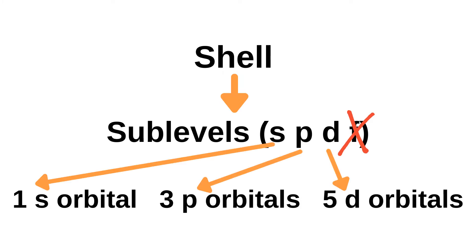Every sublevel has its own orbitals and each orbital can hold two electrons. The S sublevel has one orbital, so it can hold a maximum of two electrons. The P sublevel has three P orbitals, so it can hold a maximum of six electrons, and the D sublevel has five D orbitals, so it can hold a maximum of ten electrons.